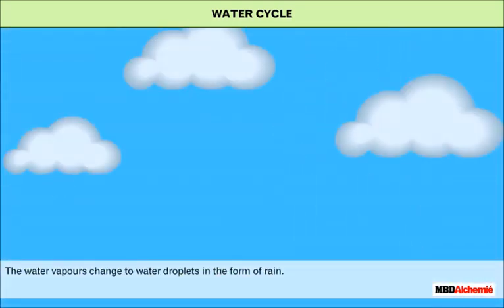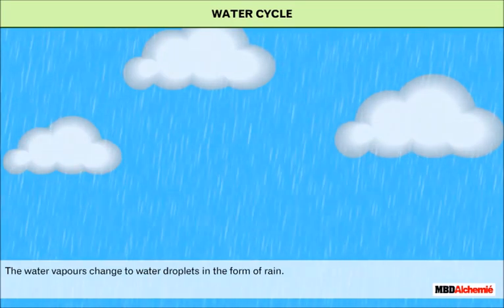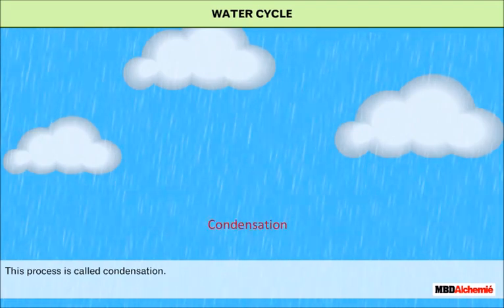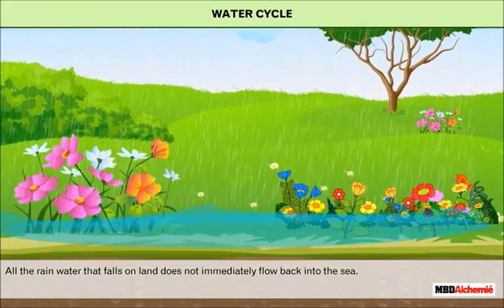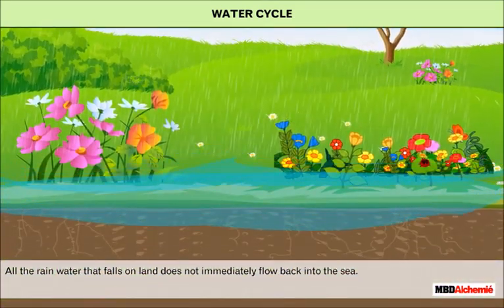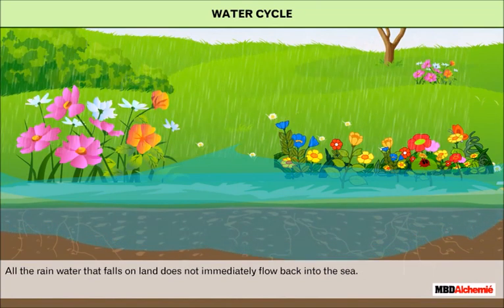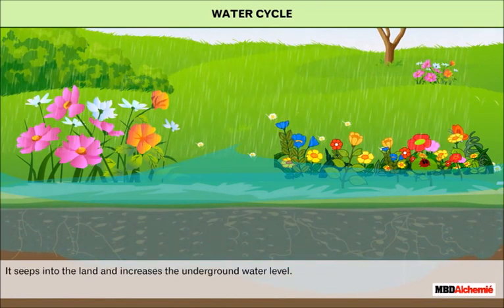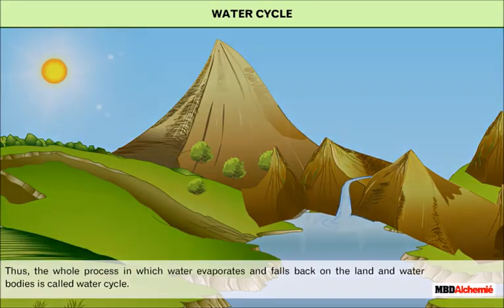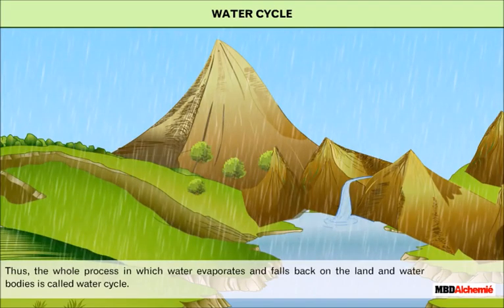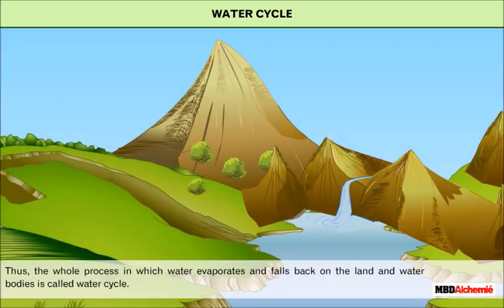These water vapors come close to each other to form clouds. The water vapors change to water droplets in the form of rain — this process is called condensation. Rain is a form of precipitation. All the rainwater that falls on land does not immediately flow back into the sea; it seeps into the land and increases the underground water level. Thus, the whole process in which water evaporates and falls back on the land and water bodies is called the water cycle.